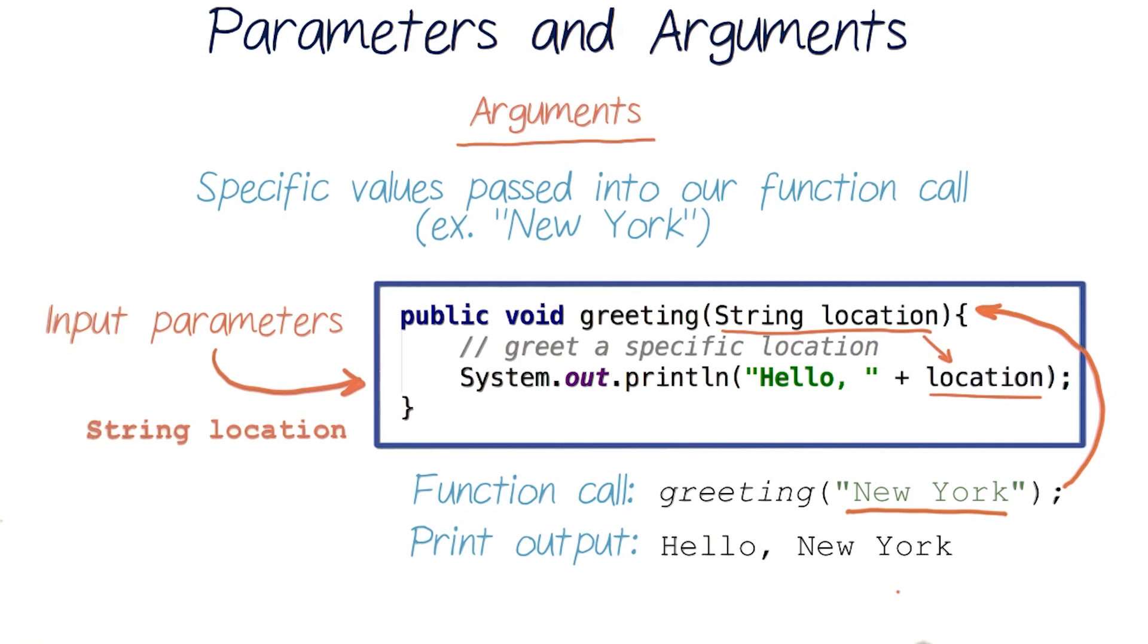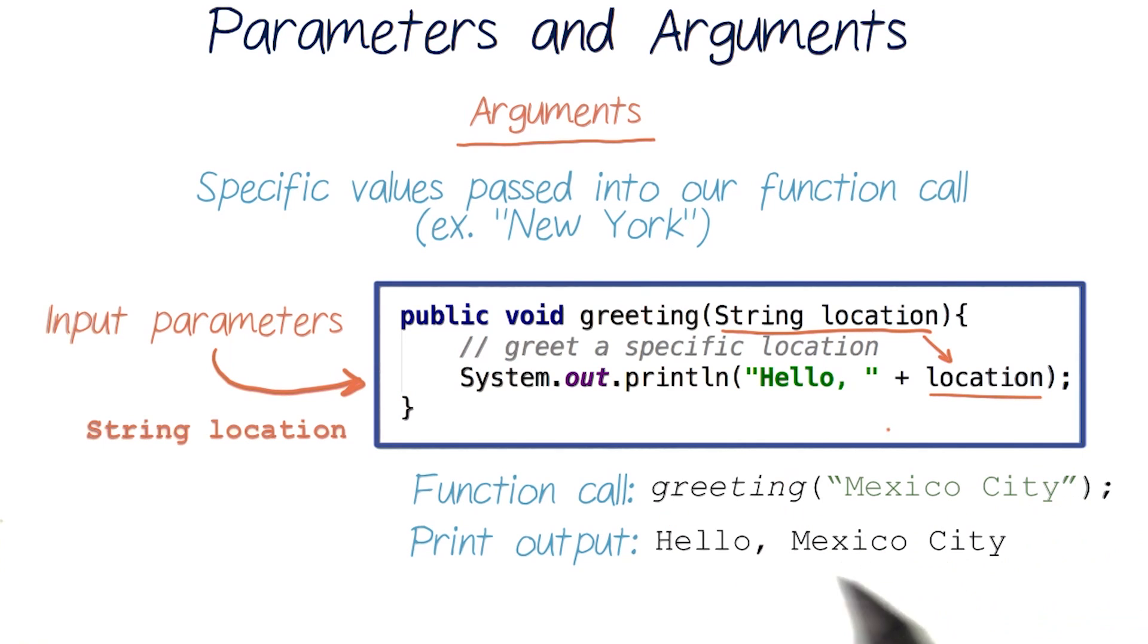Great, and I can repeat this code and input any other location I want. Our greeting function will accept any string input, and string location will be assigned its value. So if I call greeting and pass in the string Mexico City, the print output will be hello Mexico City.